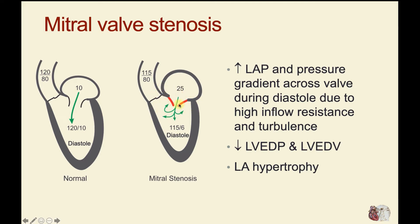However, with mitral valve stenosis, when you have a narrowing of the mitral valve so that the orifice area is greatly reduced, we may find that left atrial pressure becomes very high — 25 in this example. But even despite this very high pressure, blood still has difficulty moving across that valve and filling the left ventricle, so left ventricular end diastolic volume and end diastolic pressure may be reduced.